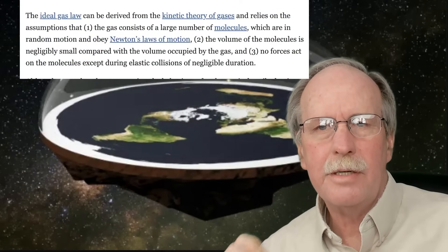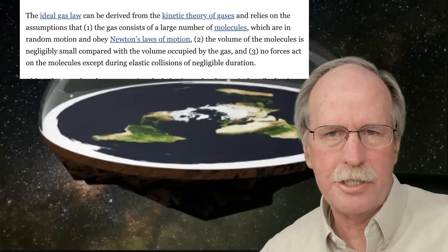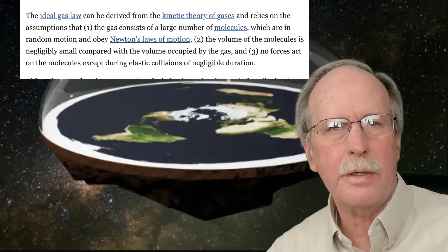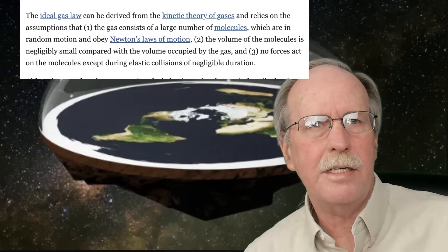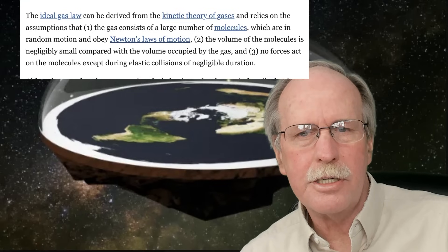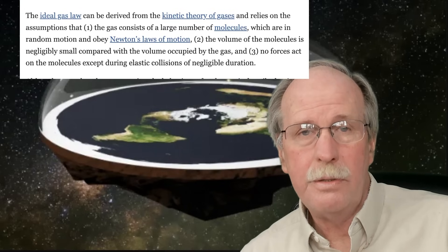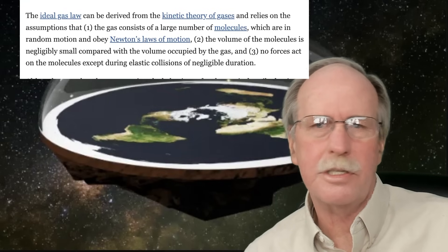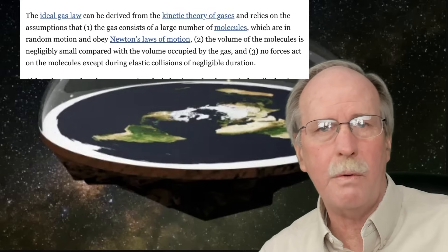Now before we get into it too deeply, let's figure out what an ideal gas is. It actually has a definition and we need to pay attention to that. This is from the Encyclopedia Britannica and it's a very nice definition. So we're going to use this. An ideal gas can be derived from the kinetic theory of gases and relies on several assumptions. Number one, that the gas consists of a large number of molecules. And these molecules are in random motion and obey Newton's laws of motion. That's a key thing. They obey Newton's laws of motion. So if you cite the ideal gas law, you have to be in agreement with Newton's laws of motion. It's a requirement.